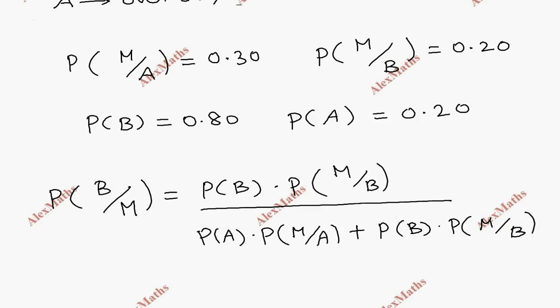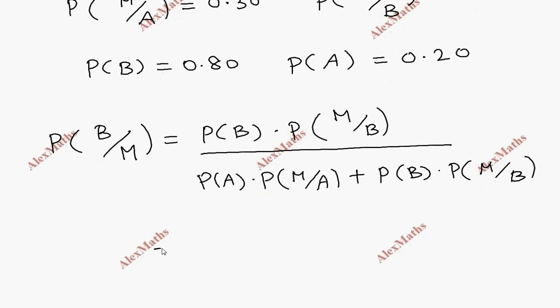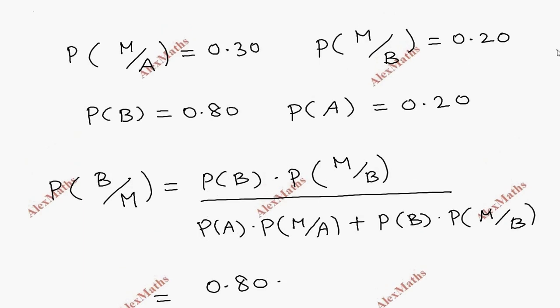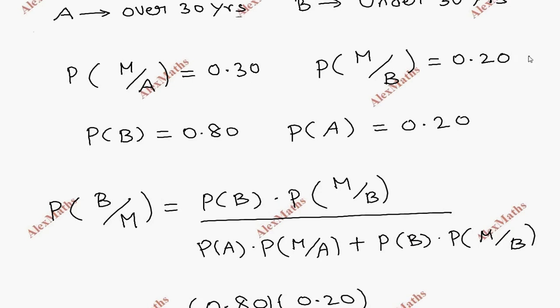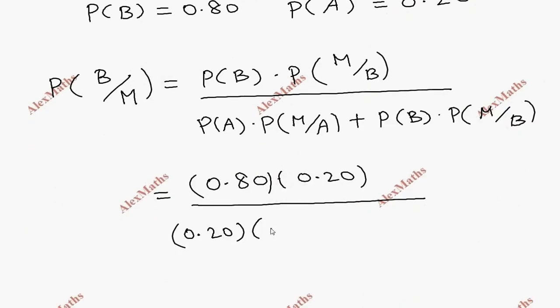So P of B is 0.80 times P of M given B is 0.20. This is the numerator. Whole divided by P of A, which is 0.20, times P of M given A, starting with 0.30.